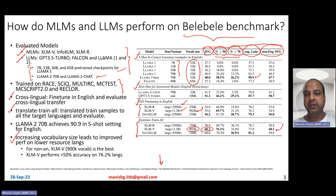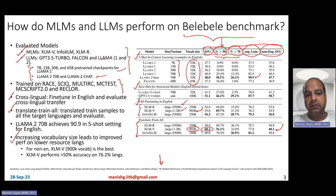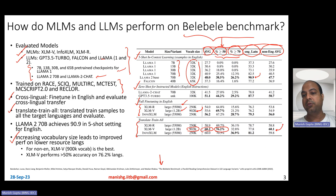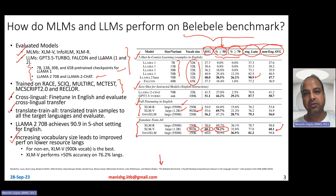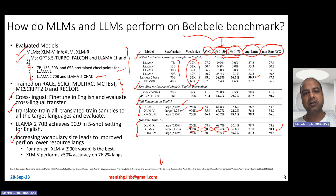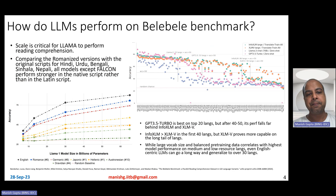If you look at the results column, XLMV achieves greater than 50% accuracy for 76.2% of languages. This basically means XLMV is super strong for low-resource and medium-resource languages on the Belebele MRC benchmark.